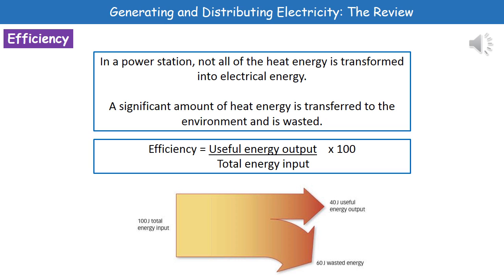We can actually calculate the efficiency of any process using the equation: useful energy output divided by total energy input, times 100 to give it as a percentage. So, if you had a Sankey diagram like the one at the bottom, our total energy input is 100 joules and our useful energy output is 40 joules. To calculate the efficiency, we would do 40 divided by 100, times 100, giving us 40% in this case.